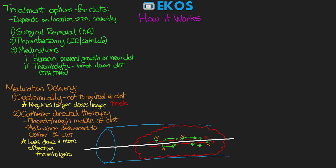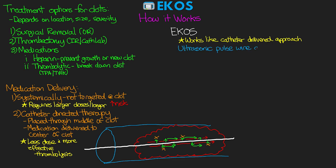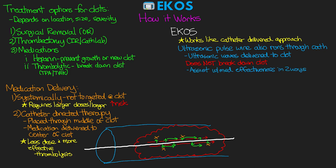So how does EKOS work? It works much like the typical catheter-directed approach — we still have a catheter going through the clot delivering our thrombolytic out the sides to the core of the clot. The big difference is that we have an ultrasonic pulse wire running through this catheter, which allows ultrasonic waves to be delivered directly to the clot. Contrary to what some people may think, the ultrasonic waves are not actively breaking down the clot — they assist with medication effectiveness in two different ways.